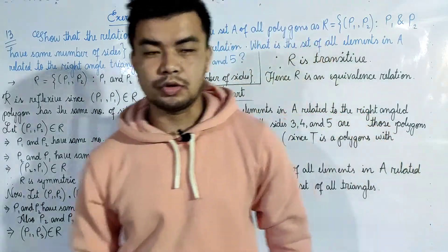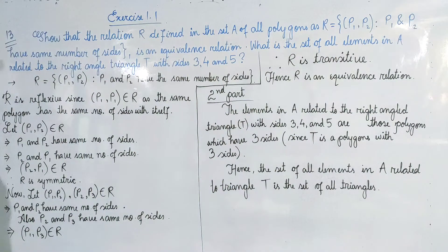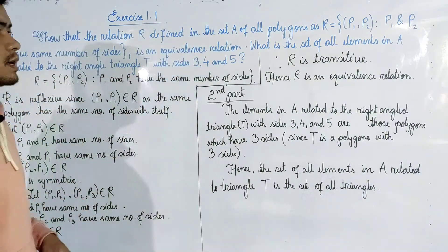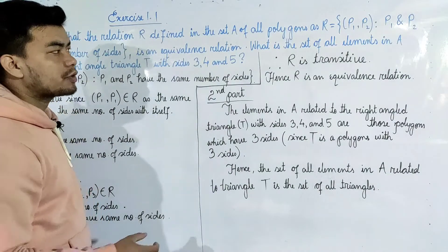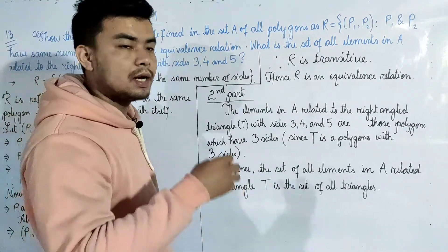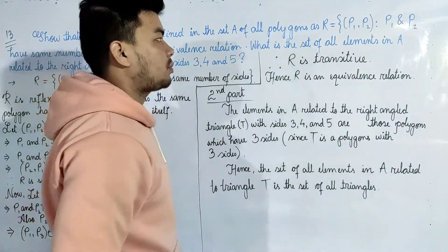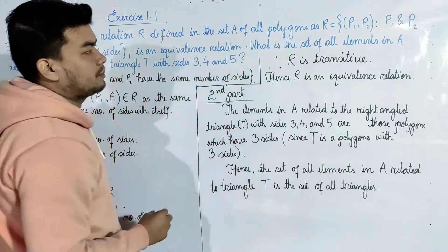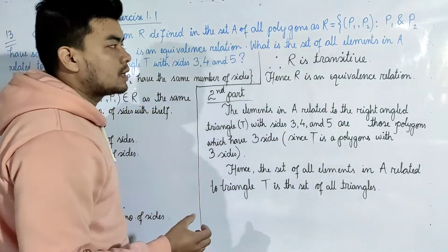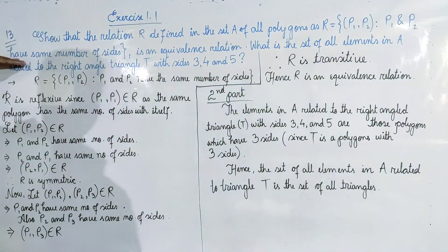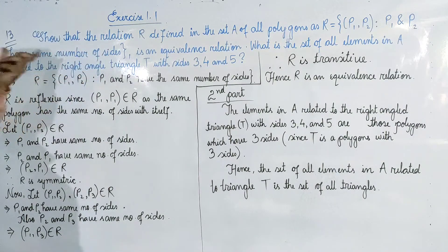Exercise 1.1, question number 13. The relation R is defined in the set A, where A is the set of all polygons. The relation R is the set of all pairs P1 and P2 such that P1 and P2 have the same number of sides.